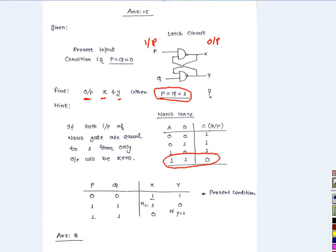This is the given state when P equals 0 and Q equals 0, so the output X equals 1 and Y equals 1. There is no problem because the input is other than 1, so the output will be 0.